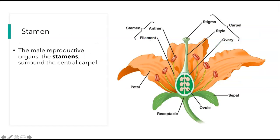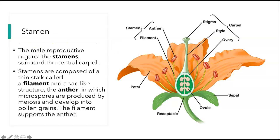Now let's talk about the stamen, or the male reproductive organs. They surround the carpel. Here is the carpel or the pistil, and here are the stamens. Stamens are composed of a thin, stalk-like filament and a sac-like structure called the anther, in which the microspores are produced. What are the microspores? The pollen. They're produced by meiosis and develop into the pollen grains. The filament supports the anther. Filament and anther together make up the stamen.